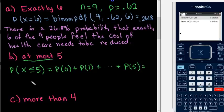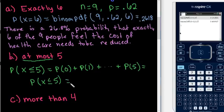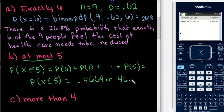So the probability that at most 5 of the 9 people will answer that they feel the cost of health care needs to be reduced is 0.4669, or 46.69%, depending on how you are to report your answer.